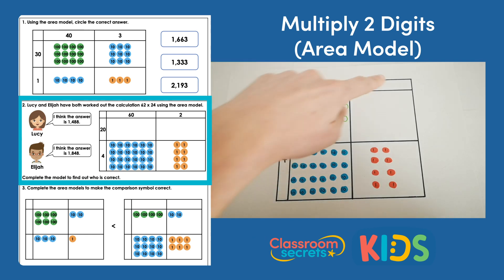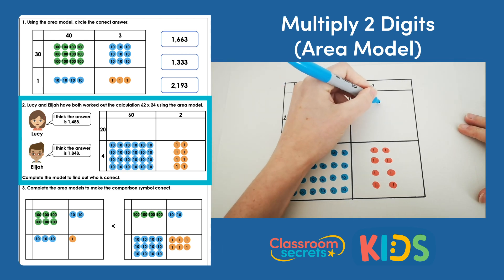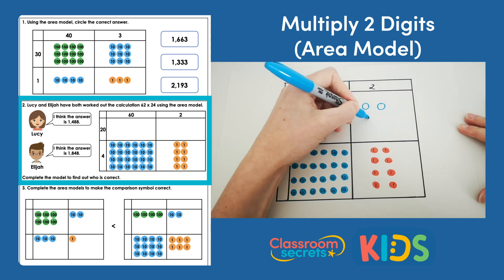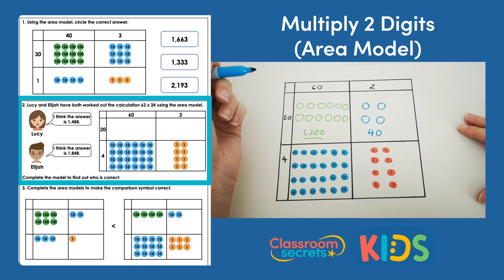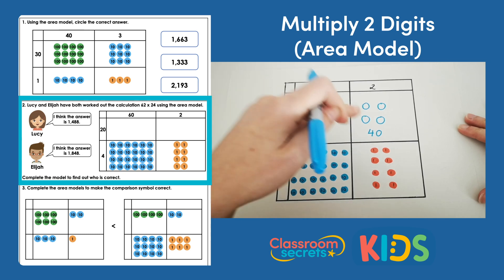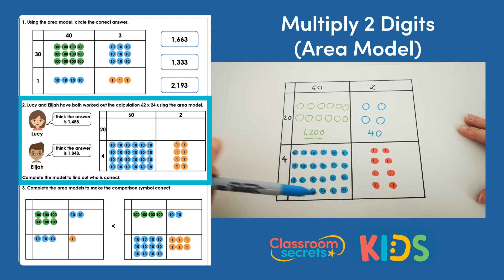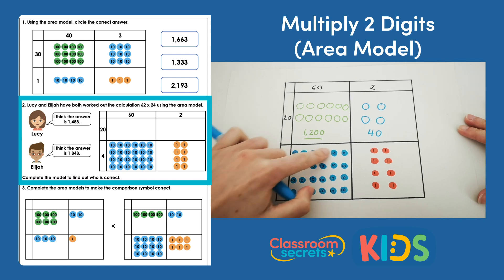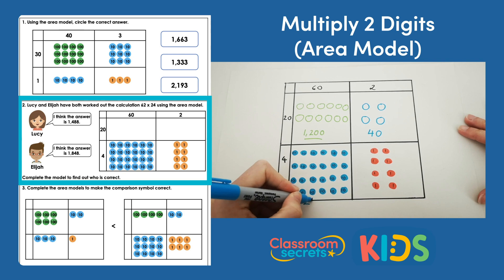Then we would do 2 times 20. That's 1 lot of 20 and 2 lots of 20, giving us 40 in total. So we've got 1,240 so far. Then 60 times 4 should give us 240, which we can represent using 24 tens counters — 6, 12, 18, 24. So that is 240.